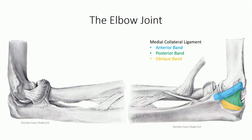Collectively, these bands serve to resist valgus stresses on the elbow. On the lateral side is the lateral or radial collateral ligament, formed from a single fan-shaped band that merges with the annular ligament, which serves to reinforce the proximal radial ulnar joint. The lateral collateral ligament resists varus stresses to the elbow joint.